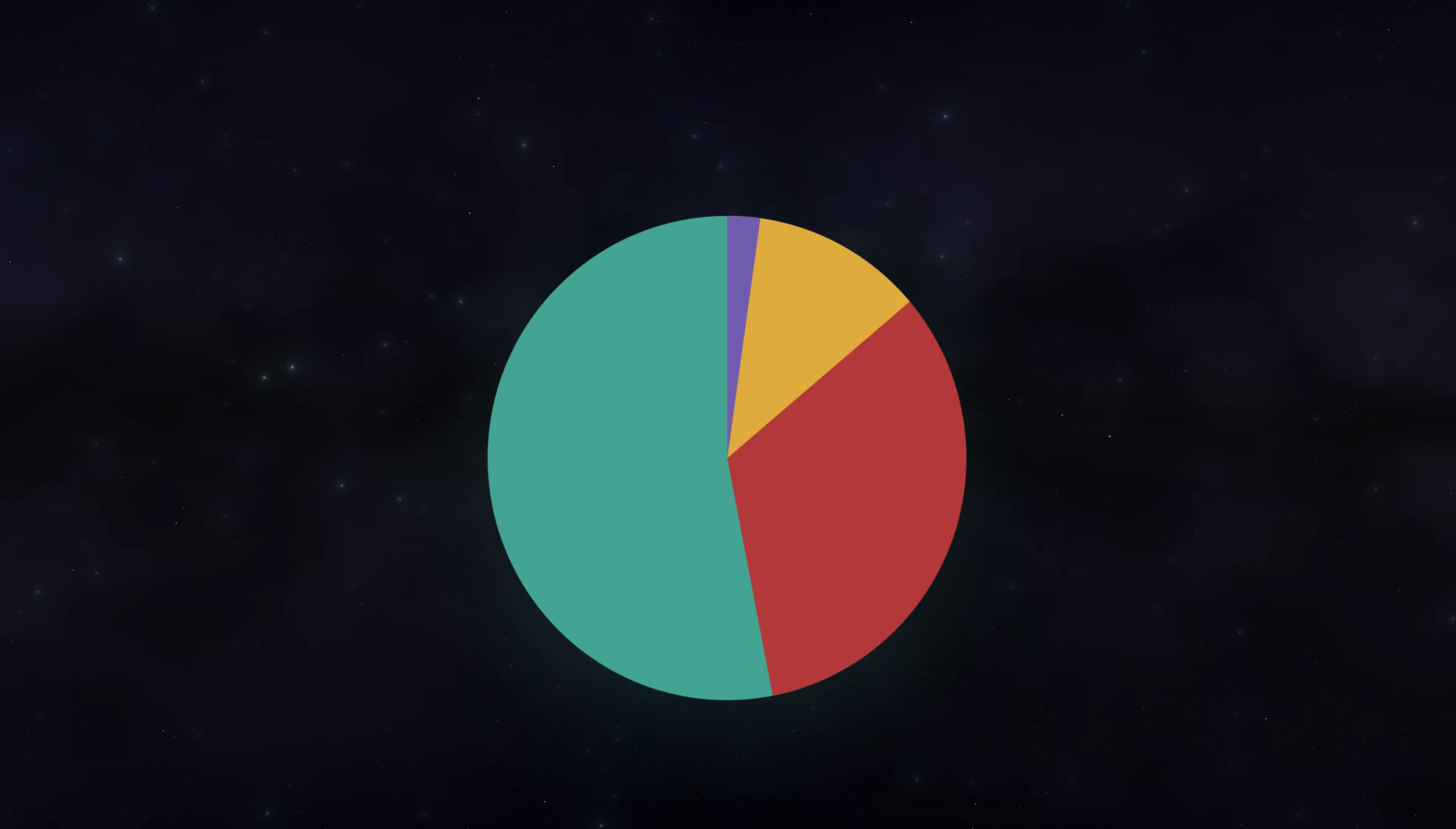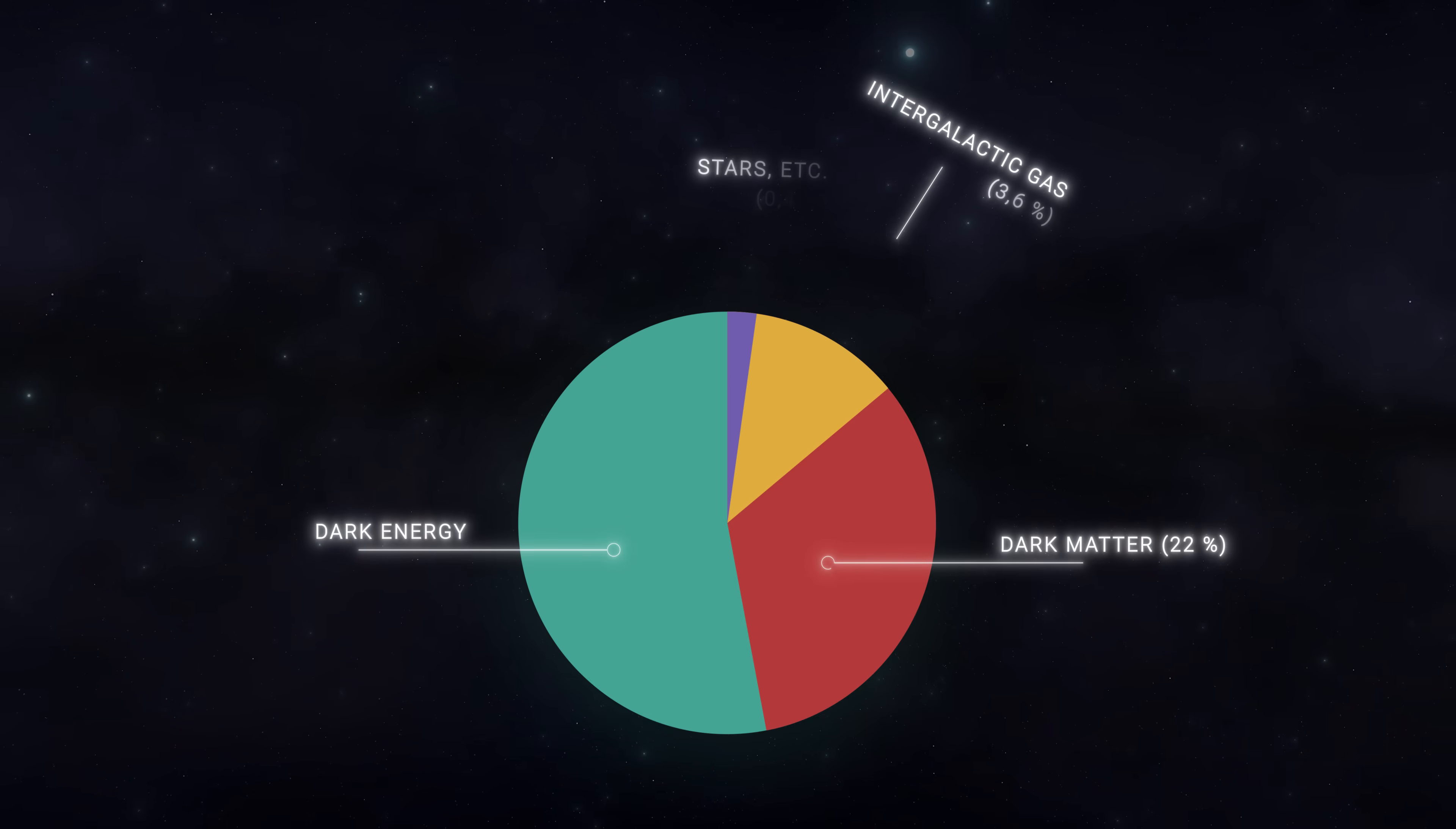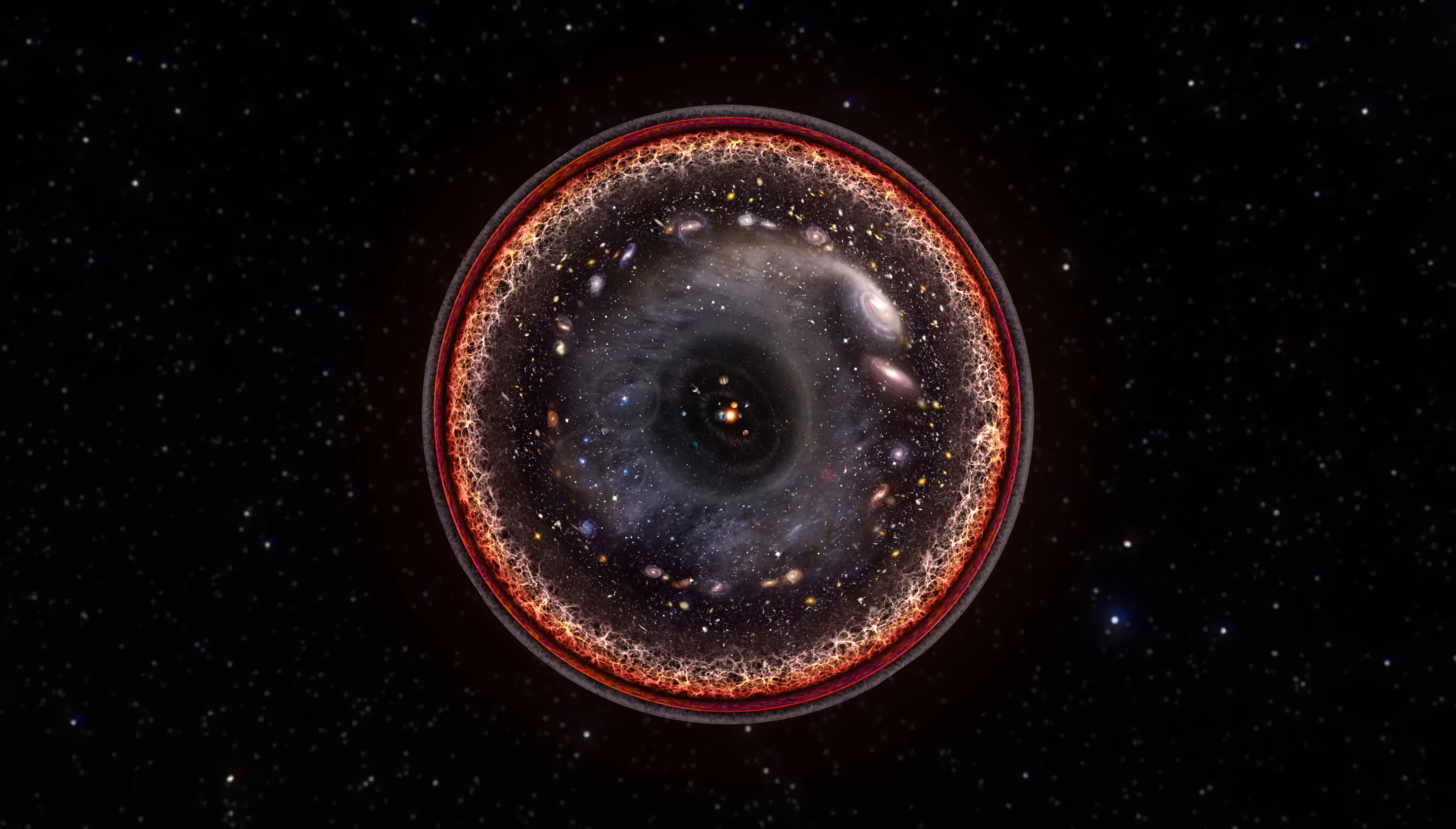According to the generally accepted cosmological principle, the universe on large scales is homogenous and isotropic, meaning that wherever you look, the distribution of matter should be roughly the same.